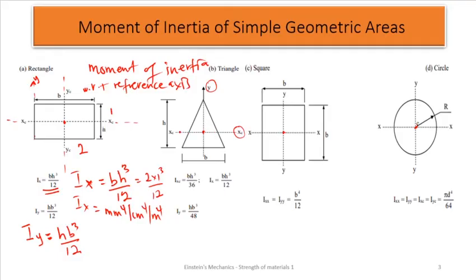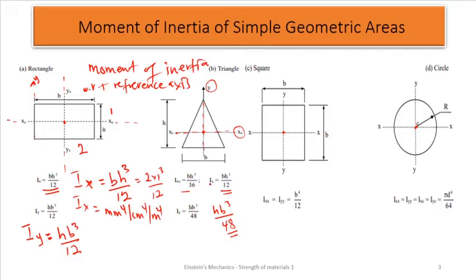For the triangle, assuming the axes are at the center, Ix = bh³/12 and Iy = hb³/48. The Iy formula differs from Ix. We can also get the centroidal Ixc = bh³/36. So either you use Ixc or Ix — each has its own formula.